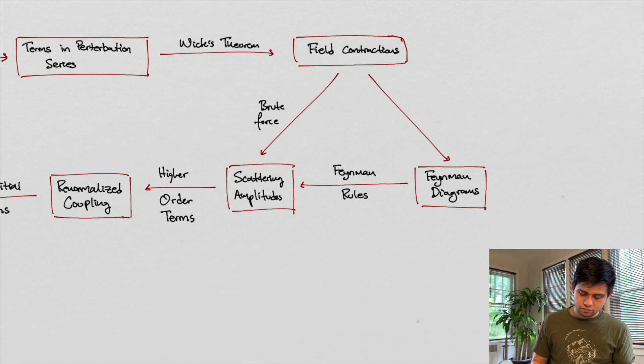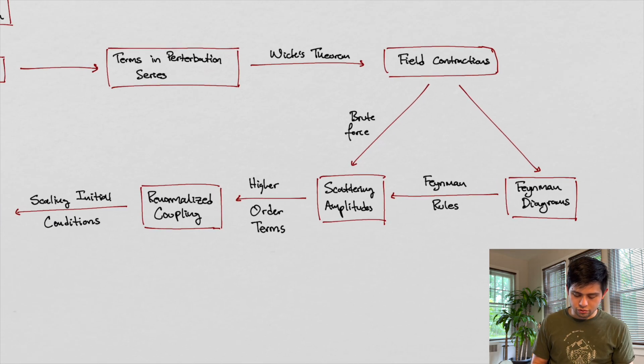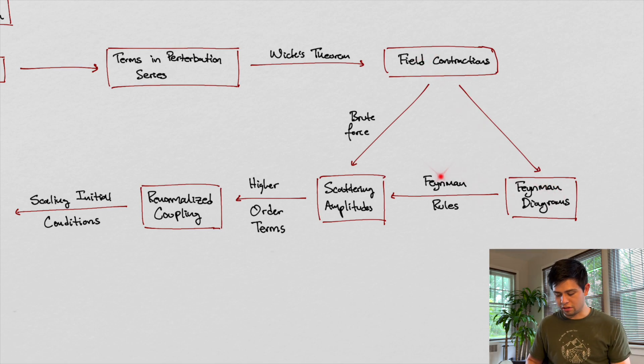we applied the Feynman rules and also got scattering amplitudes. All right, so let's, so again, so we got terms in a perturbation series, we use Wick's theorem, we use the field contractions, we get scattering amplitudes. So these are all very important means to an end here, the end being scattering amplitudes. Or we can go this route, right? We can take the Feynman diagrams, understand the Feynman rules, and get scattering amplitudes.